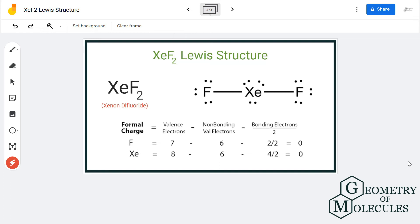To check if this structure is stable enough, we will calculate the formal charges for both xenon and fluorine atoms for this molecule. Here is the formula for calculating formal charges. Fluorine has 7 valence electrons, there are 6 non-bonding pairs of electrons, and there are 2 bonding pairs of electrons. So here, the formal charge for fluorine atoms is zero.